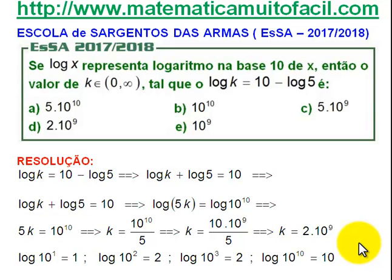Zero e infinito, perfeito? São os valores não negativos de K, tal que o log de K é igual a 10 menos o log de 5. Vêm aqui 5 itens, um deles será o verdadeiro. Vamos trabalhar.